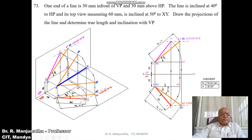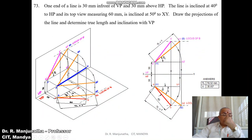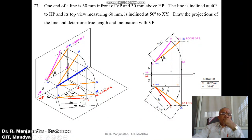Since we don't know the true length, we find it using the front view, because the true inclination with respect to HP is given. The true inclination can be seen in the vertical plane, i.e., the front view. To do this, we make the top view line parallel to XY. With A as center and radius AB (60 mm), we rotate it so that AB1 is parallel to XY.